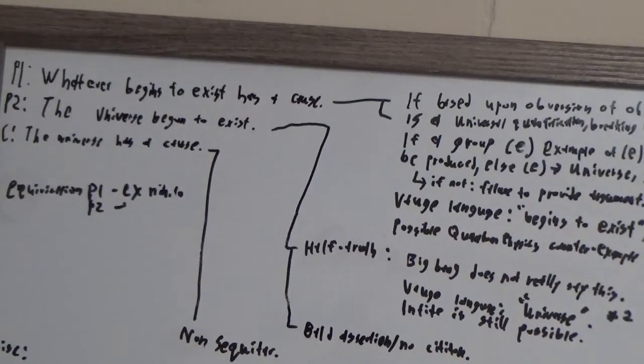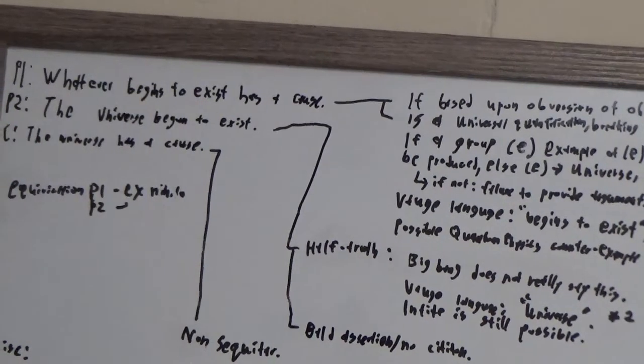Kalam Cosmological Argument. Whatever begins to exist has a cause, the universe begins to exist, the universe has a cause. There's many, many problems with this.